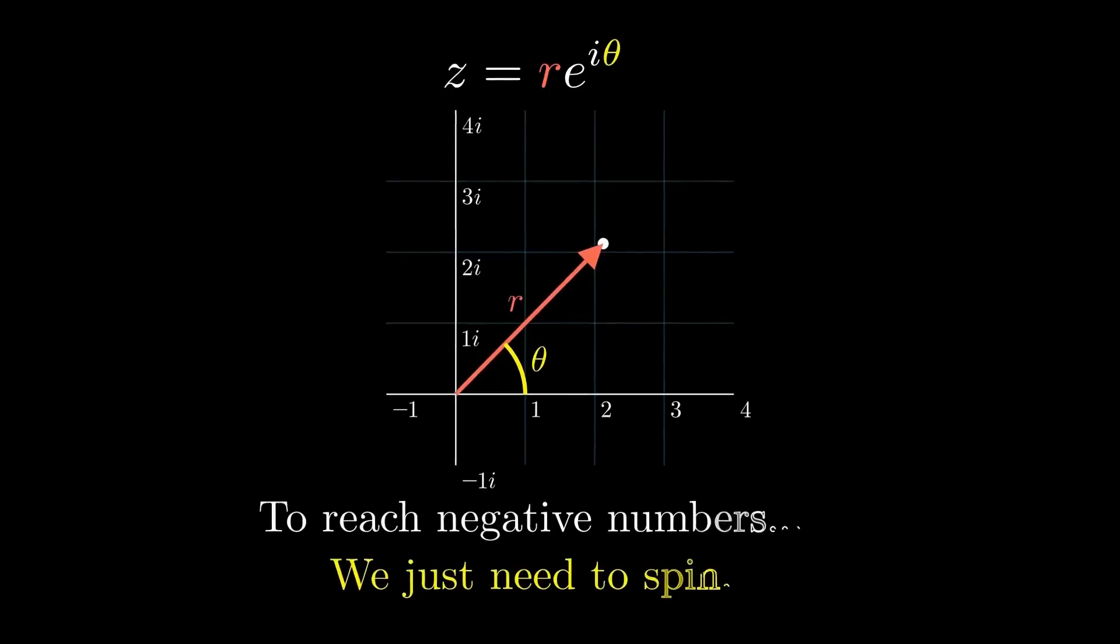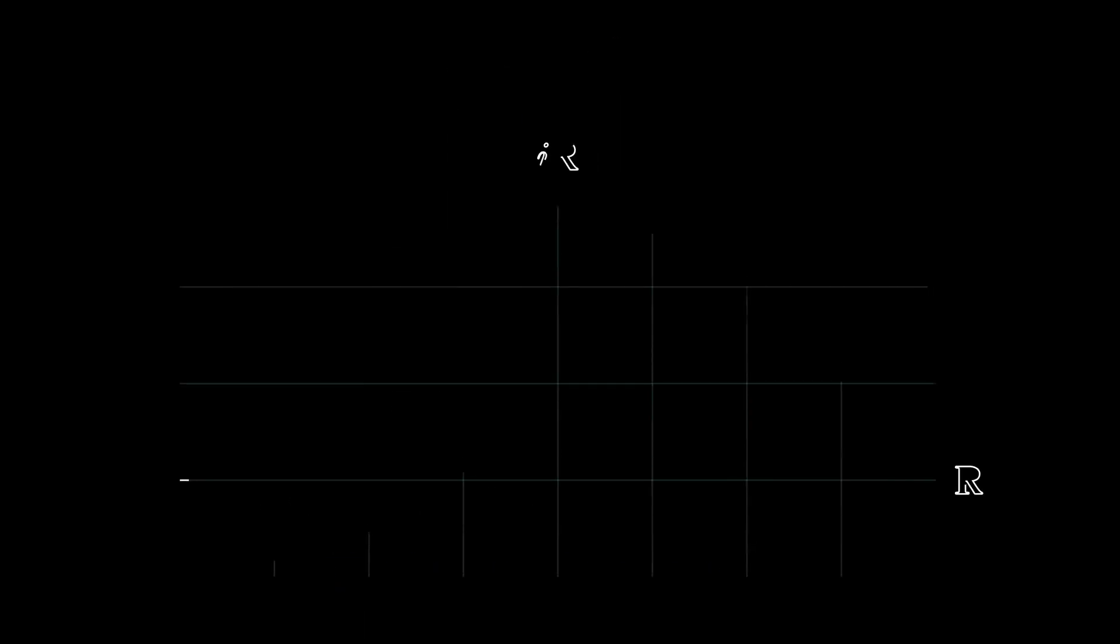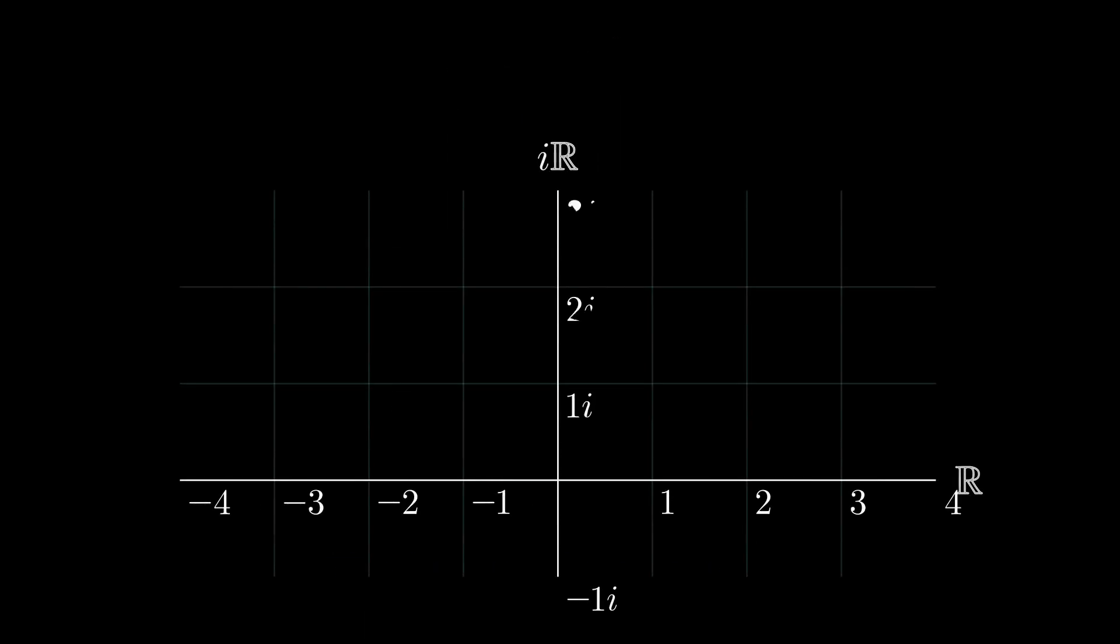And this is the key. To reach negative numbers, we don't need to grow. To solve this puzzle, we must leave the number line behind and enter the complex plane.